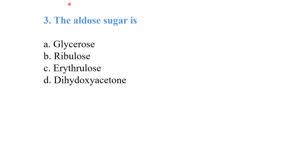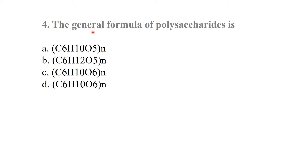The triose sugar is glycerose — option A is glycerose, option B is ribulose, option C is erythrose or dihydroxyacetone. The best answer is option A, glycerose. Polysaccharides are carbohydrates having many monosaccharides.